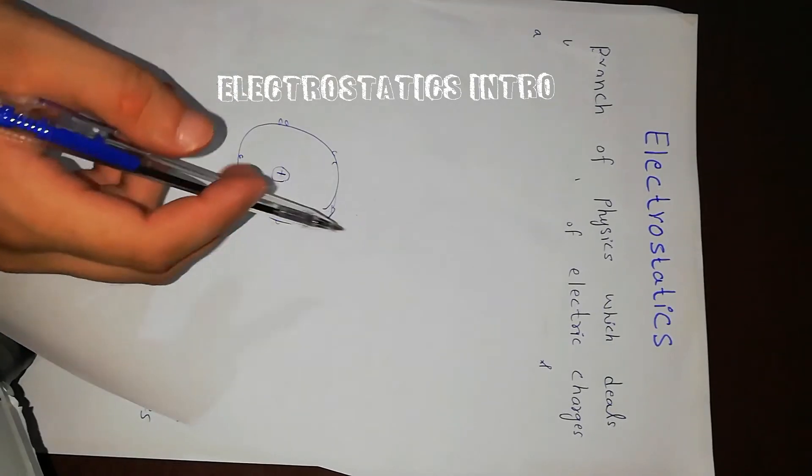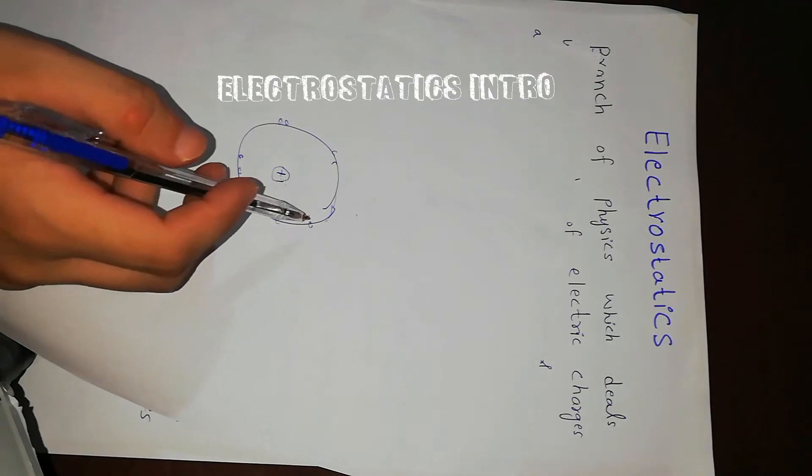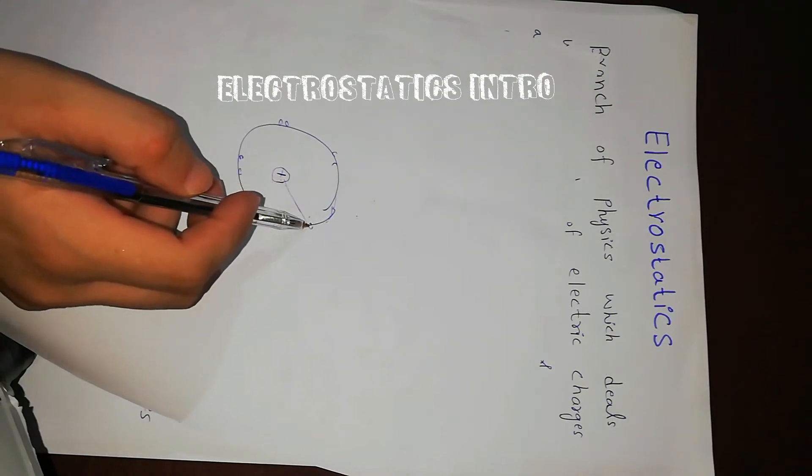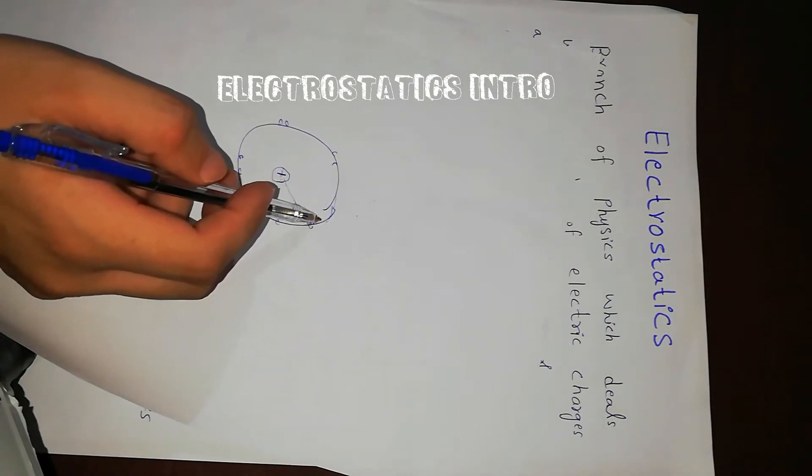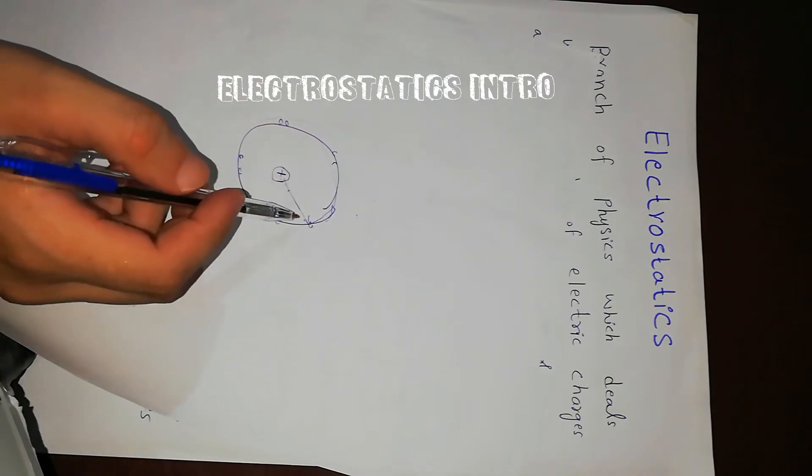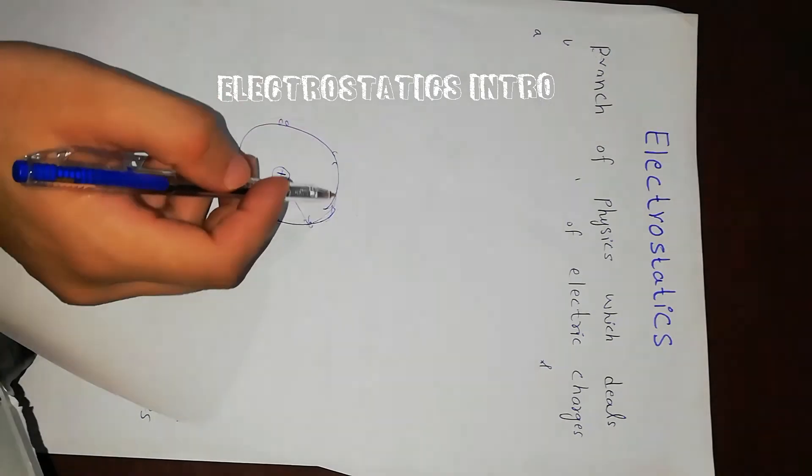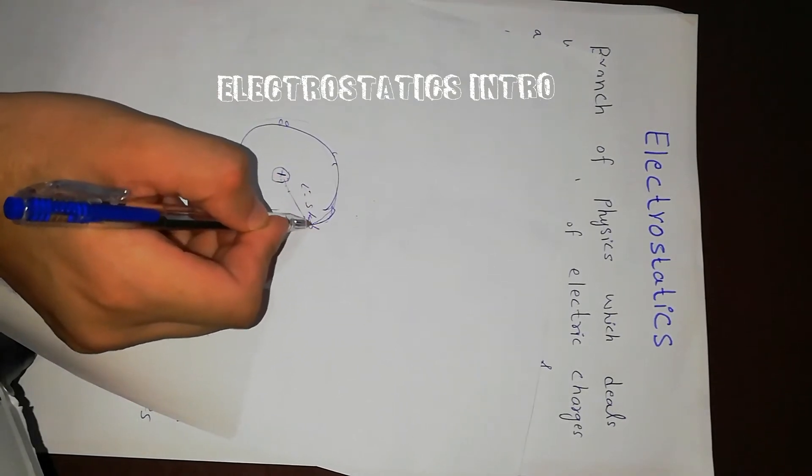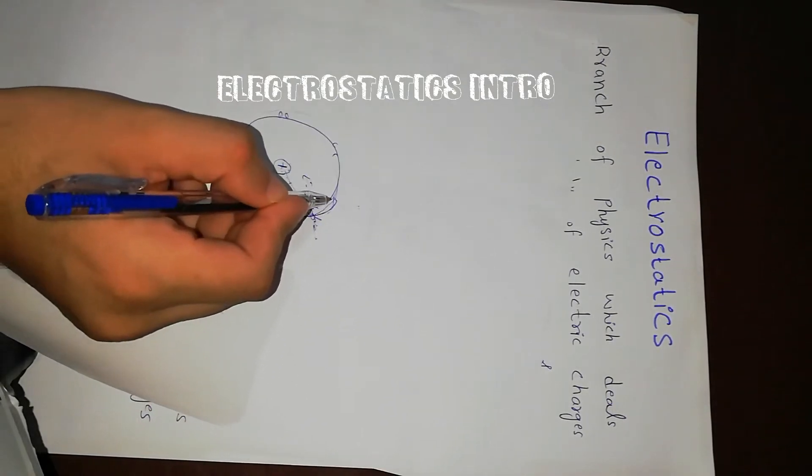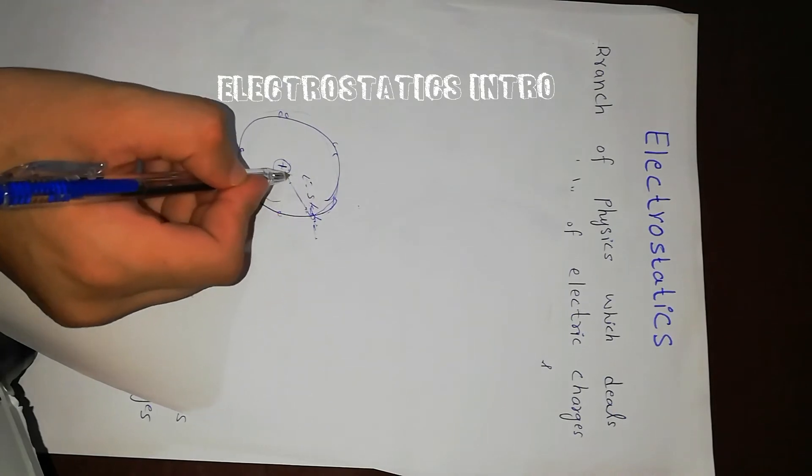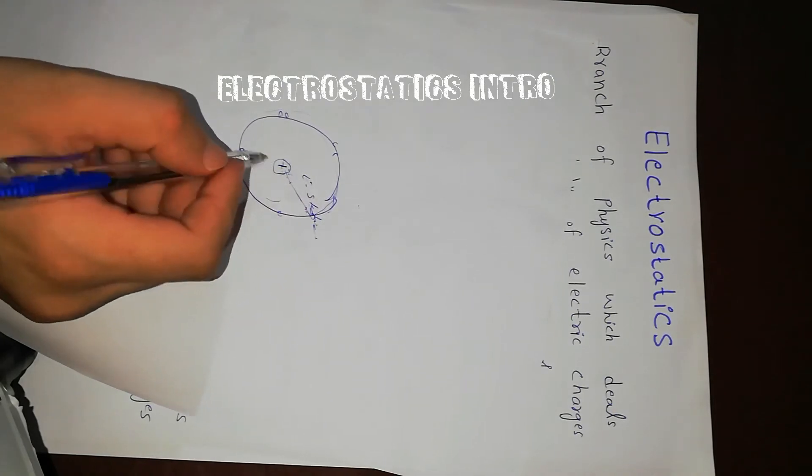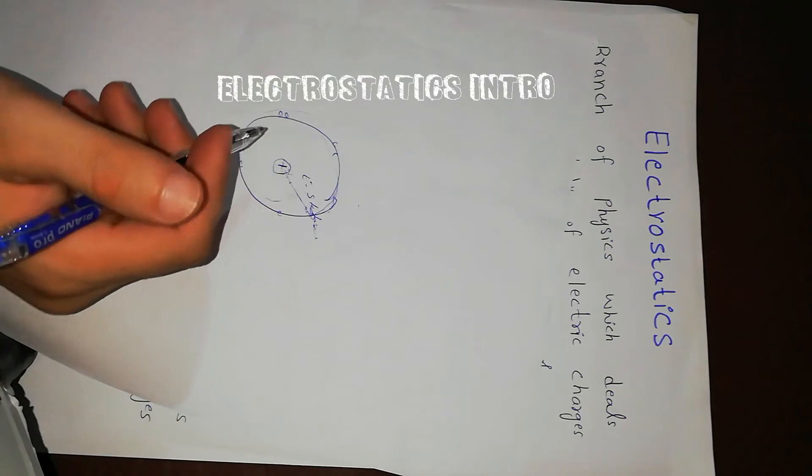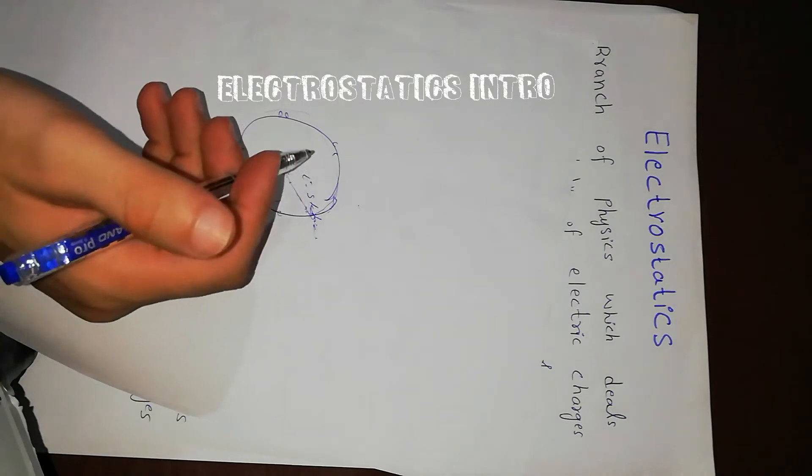So here there is an electric force which keeps electrons revolving around the nucleus because of electrostatic force. This electrostatic force is important for the stability of the atom. If this force does not exist, then the atom is not stable.